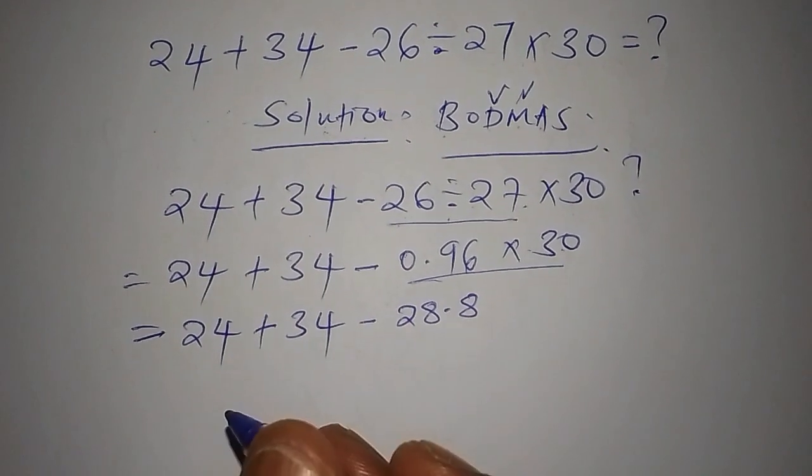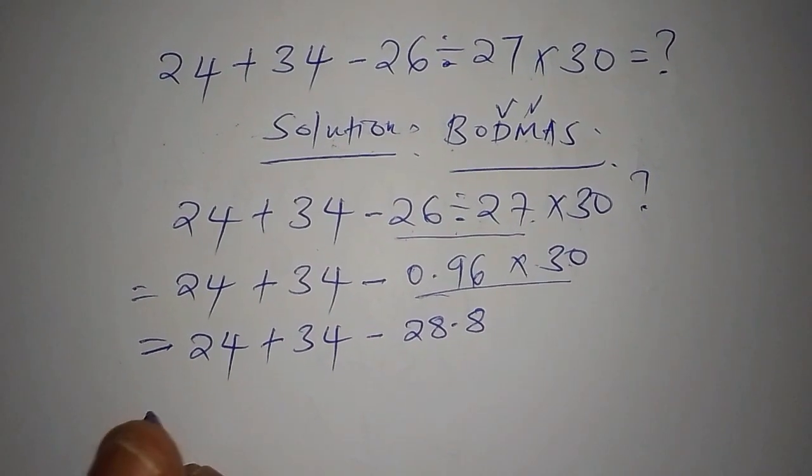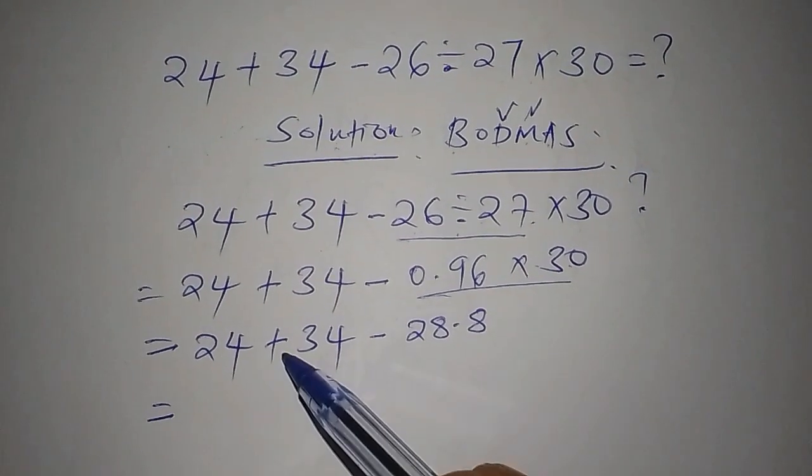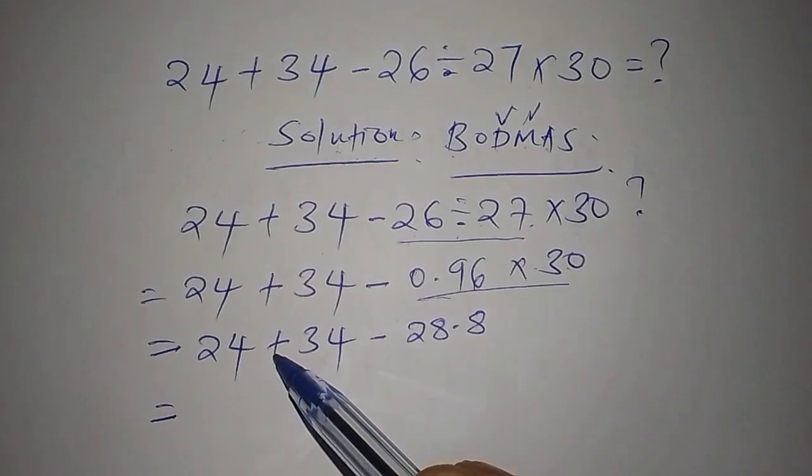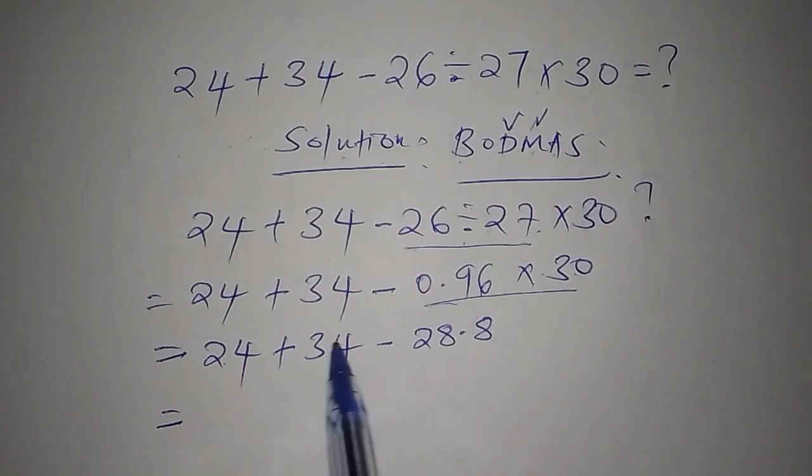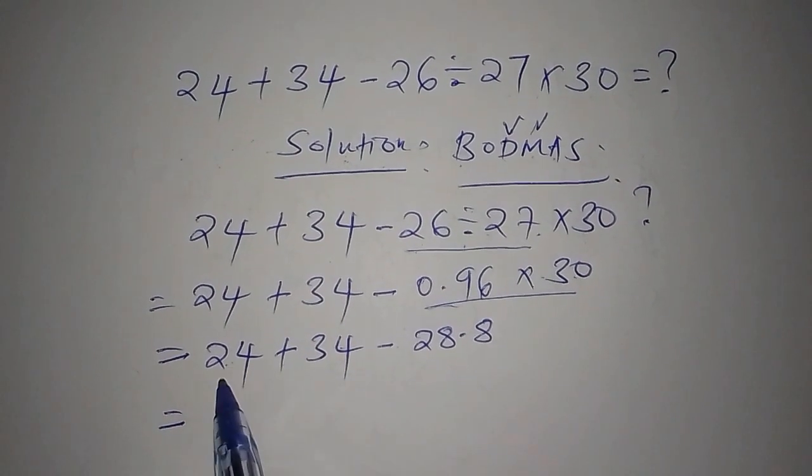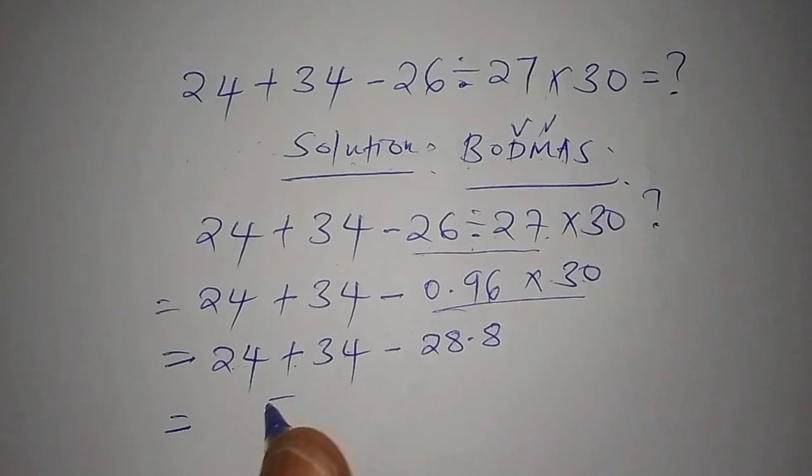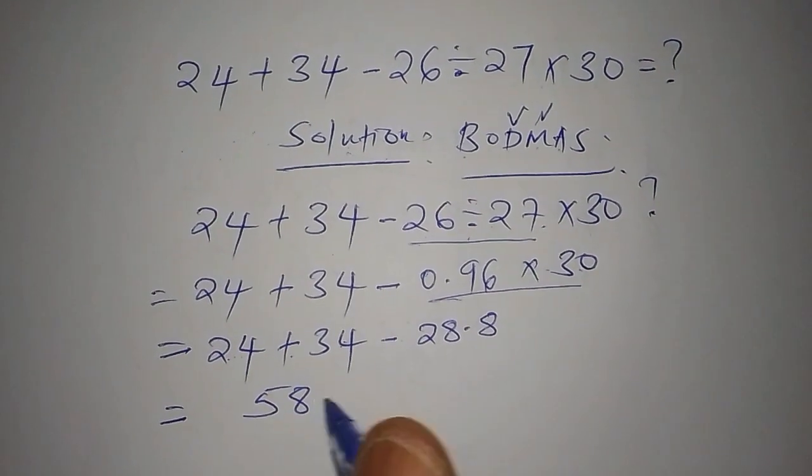Now, so the next operation is, we no longer have the multiplication. So this one, we have the addition and we have the subtraction. So we shall now be able to work out the addition first. That is 24 add to 34, and our answer now becomes 58.